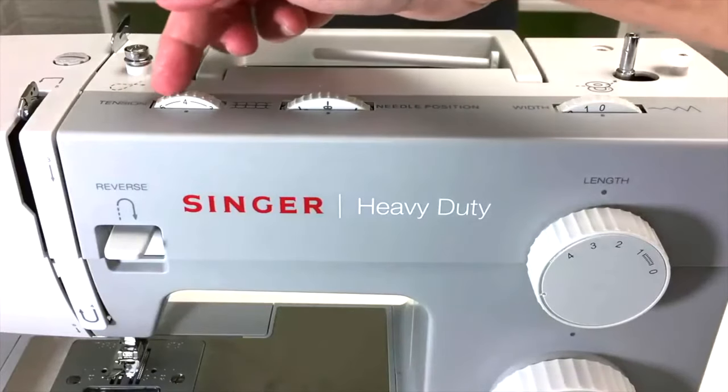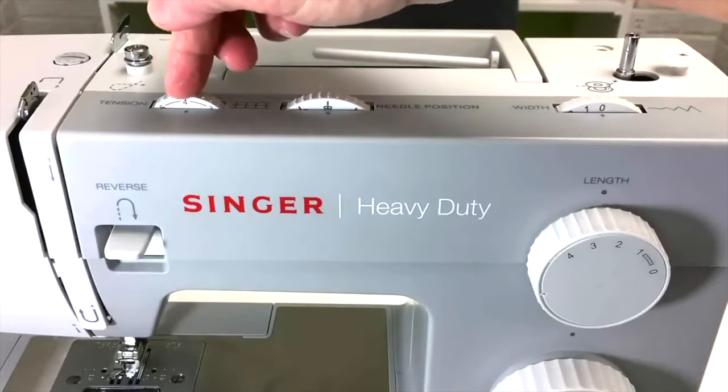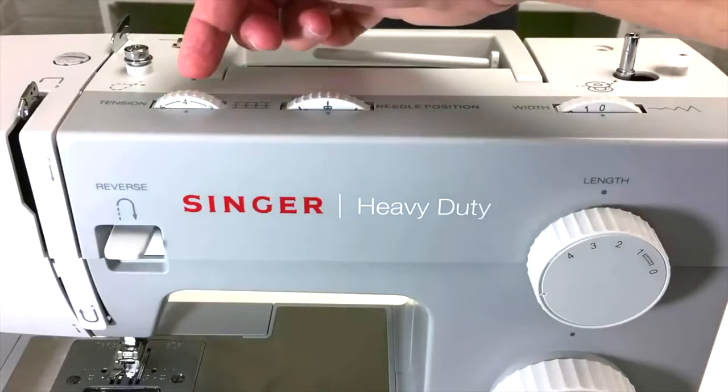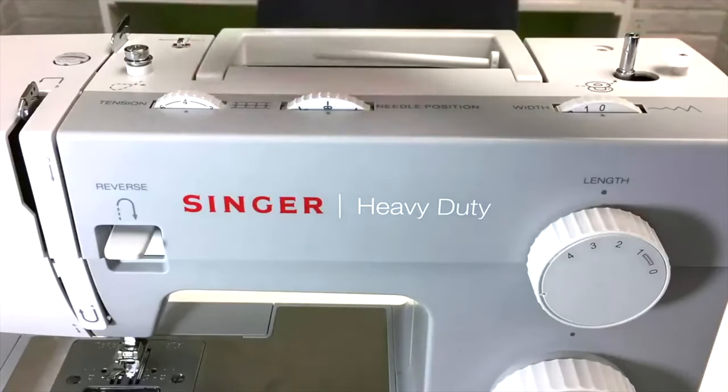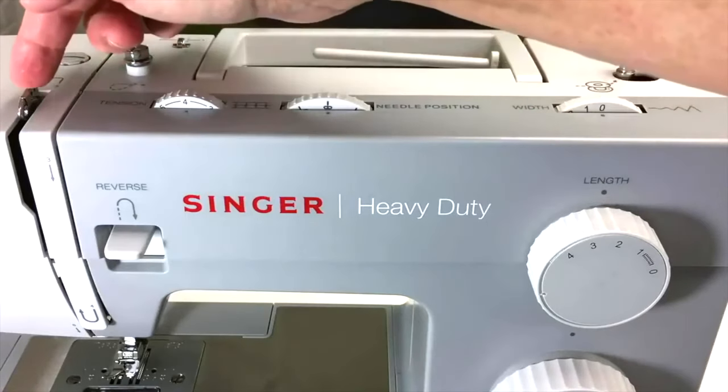You'll also have a dial for the tension of the top thread in your machine. This is very important. You want to make sure the tension is correct so that your top and bottom threads are sewing together nicely. This is the take-up lever.